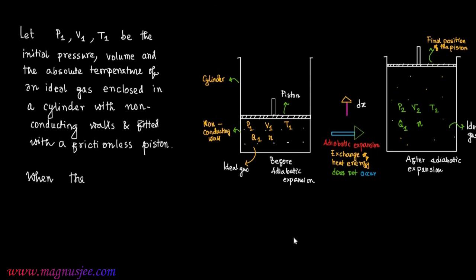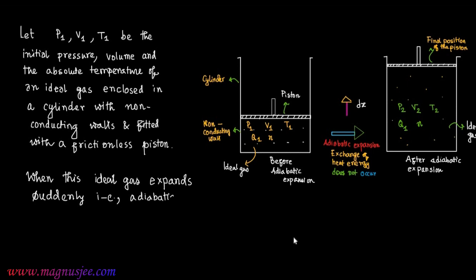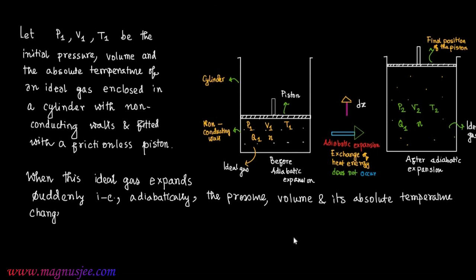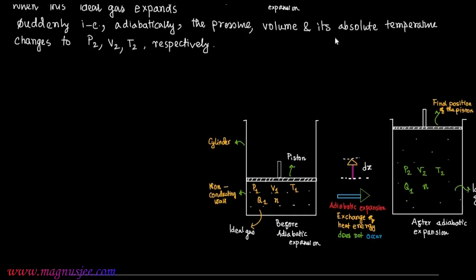When this ideal gas expands suddenly and adiabatically in this cylinder, the pressure, volume, and absolute temperature will change to P2, V2, T2 respectively.